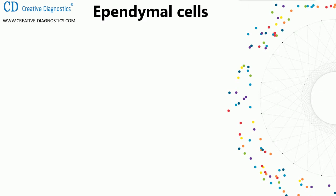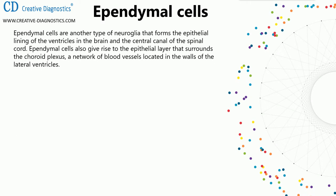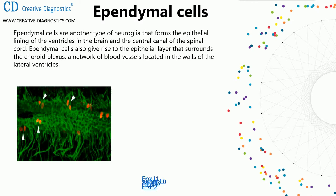Sixth: ependymal cells. Ependymal cells are a type of glial cell that forms the epithelial lining of the ventricles in the brain and the central canal of the spinal cord. Ependymal cells also give rise to the epithelial layer that surrounds the choroid plexus, a network of blood vessels located in the walls of the lateral ventricles. Ependymal cell markers include FOXJ1, vimentin, S100B, CD24, and LRP2.